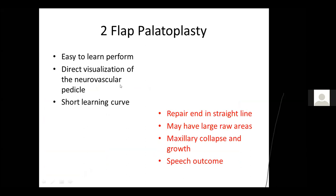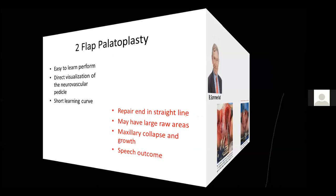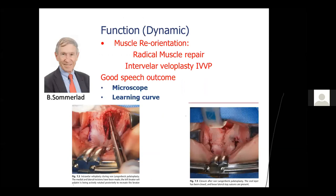The two-flap technique has many advantages: it's easy to learn and widely performed worldwide. You can directly visualize the neurovascular pedicle and skeletonize it to move the flap backwards as much as possible. It has a very short learning curve. However, the repair ends in a straight line, leaving a large denuded area, resulting in maxillary collapse and gross growth affection, and the speech outcome is not very good. This lasted for more than 150 years, but in the early 1980s, things changed.